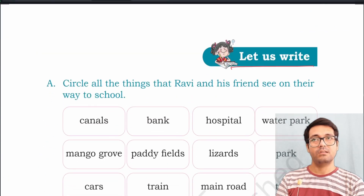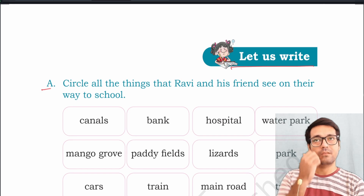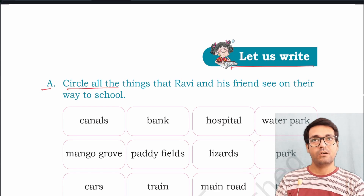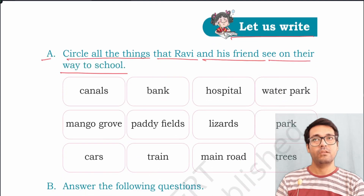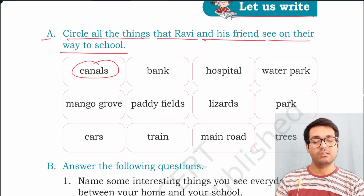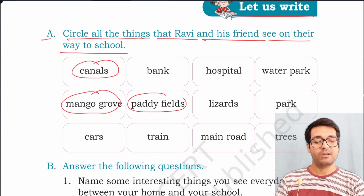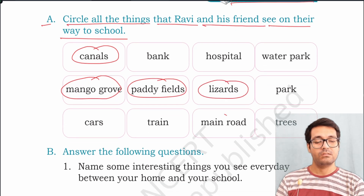Let us write. A: Circle all the things that Ravi and his friend see on their way to school. They see canals, mango grove, paddy fields, lizards, and they reach the main road.